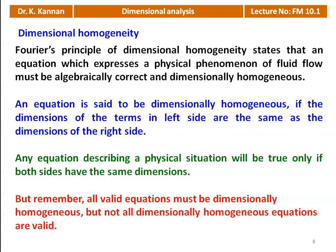Remember that all valid equations must be dimensionally homogeneous, but not all dimensionally homogeneous equations are valid. Any valid equation should be dimensionally homogeneous, but the reverse is not necessarily true. The dimensions of both left side and right side of any equation should be the same, and any equation we derive in fluid mechanics should be algebraically correct and dimensionally homogeneous.